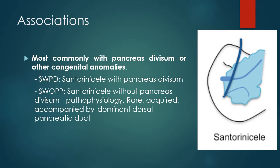Santorini Cele has been most commonly associated with pancreas divisum, known as SWPD. When it occurs without pancreas divisum, it is known as SWPP — Santorini Cele without pancreas divisum. Most of these cases are accompanied by a dominant dorsal pancreatic duct, where the caliber of the dorsal duct is wider than the ventral duct, which has similar pathophysiology to that of pancreas divisum. SWPP is a rare condition most commonly found in patients with chronic pancreatitis and is considered an acquired condition.